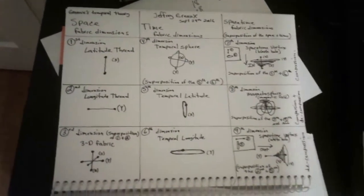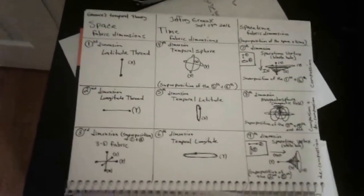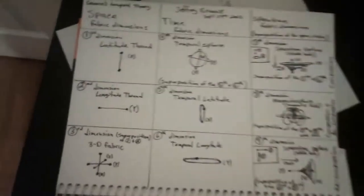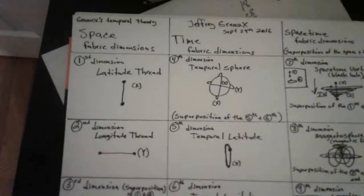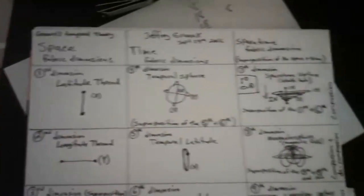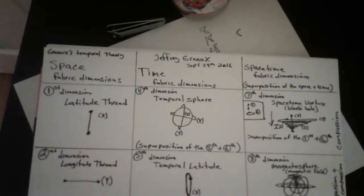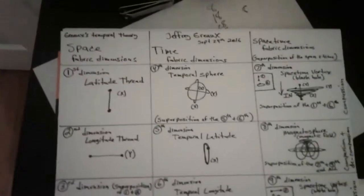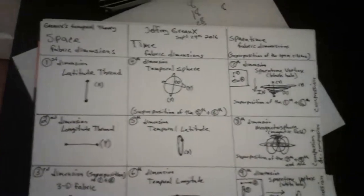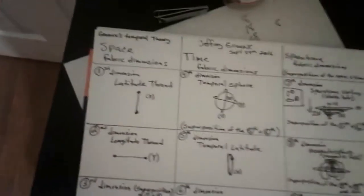The only valid order is to have the temporal sphere at the same time as the latitude thread, temporal latitude at the same time as the longitude thread, and temporal longitude at the same time as three-dimensional space. So now I've expanded God's superposition to include six positions instead of three. Now we have two columns — a space column and a time column — which means we can cheat again and create a third column, a superposition column. So we have a space column, a time column, and now a space-time column, which is the superposition of the space and time columns.